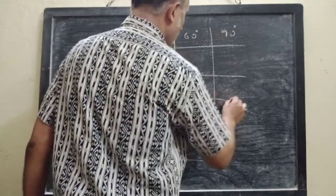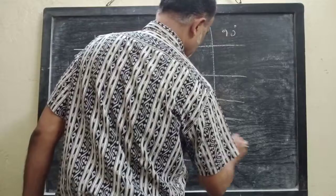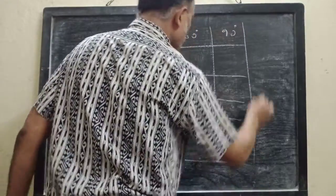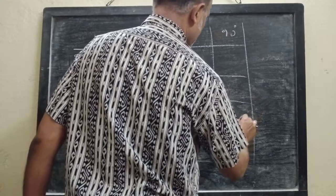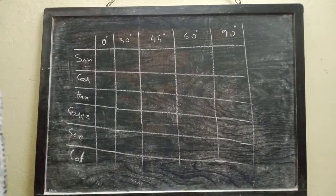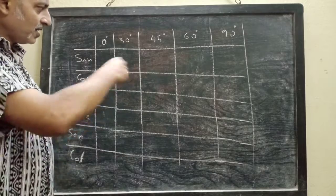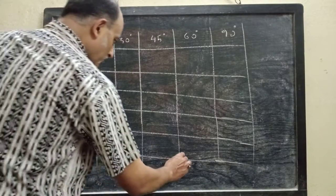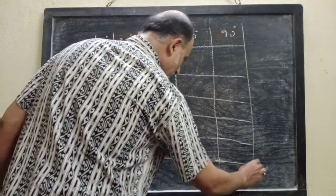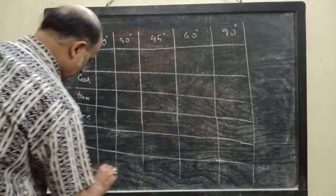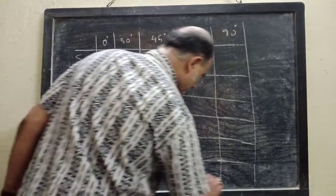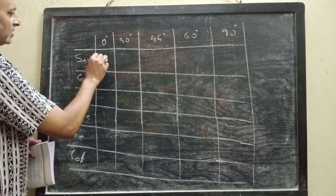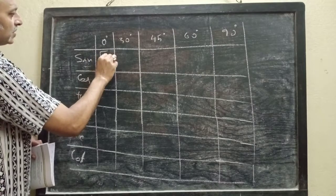Here I am discussing the method to remember the values. There is no mathematical derivation. After making the way to remember these values, next I will go to derive the values. For sine, write this sequence.